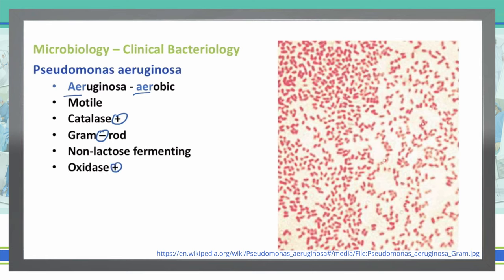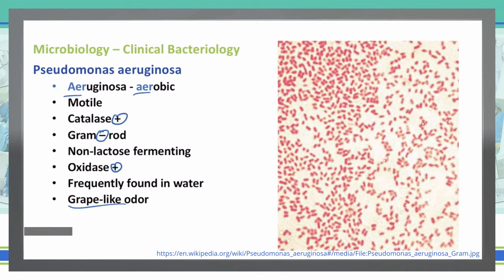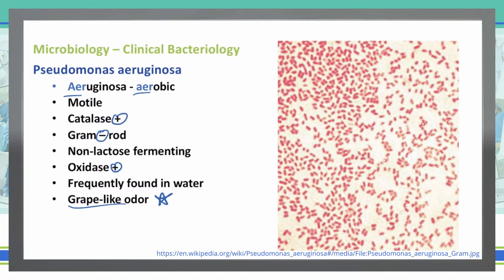We often see Pseudomonas in water and a lot of times in soil also. It's fairly easy to tell if someone has an infection with Pseudomonas because of its odor — the odor is grape-like. This is probably a buzzword you can use for Pseudomonas. If they describe a wound on a leg that has an odor that smells like grapes, that's a great buzzword for Pseudomonas infections.